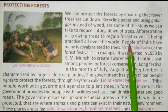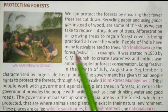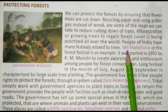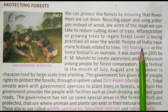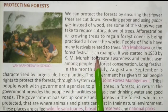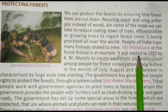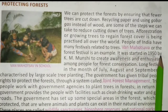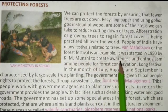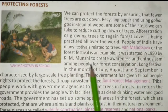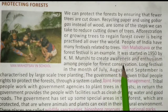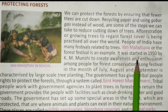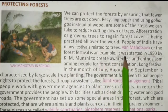People of India have many festivals related to trees. Bharat ke logon ke paas pedon se jude kai tyohaar hain. Van Mahotsav, or the forest festival, is an example. Van Mahotsav ya Van Utsav ek udaharan hai. It was started in 1950 by K.M. Munshi to create awareness and enthusiasm among people for forest conservation. Iski shuruvaat 1950 mein K.M. Munshi dwara van sanrakshan ke liye logon mein jagrukta aur utsah paida karne ke liye hui thi.